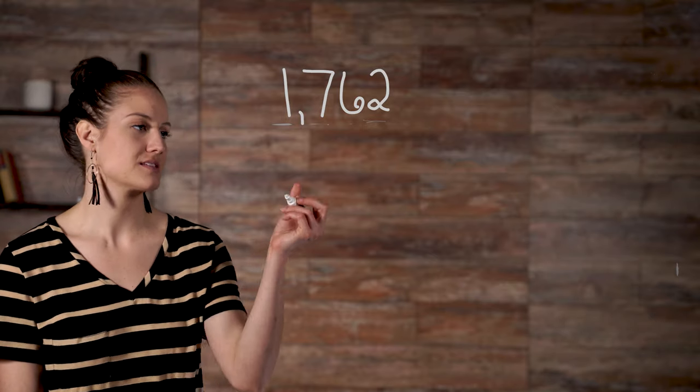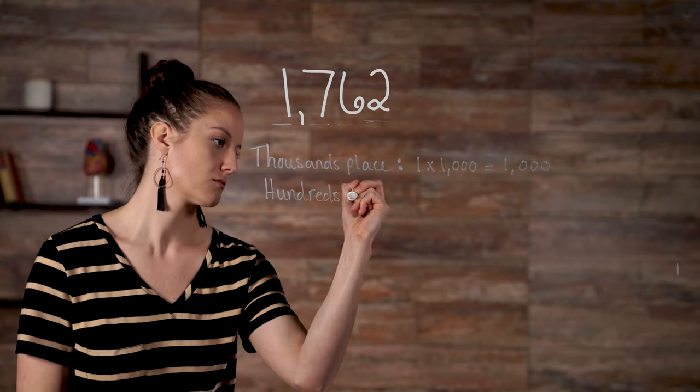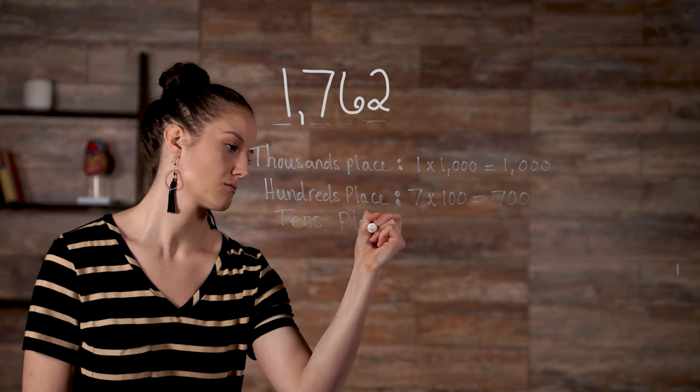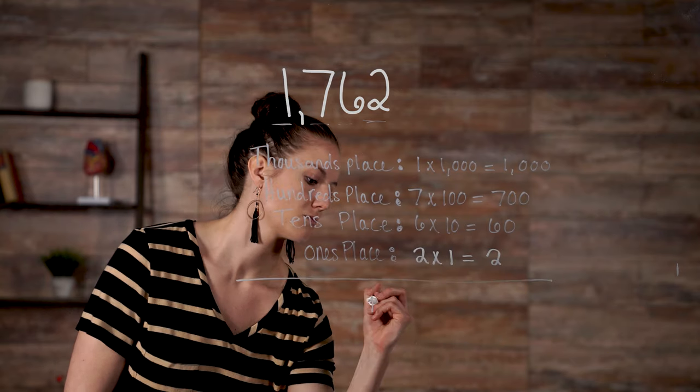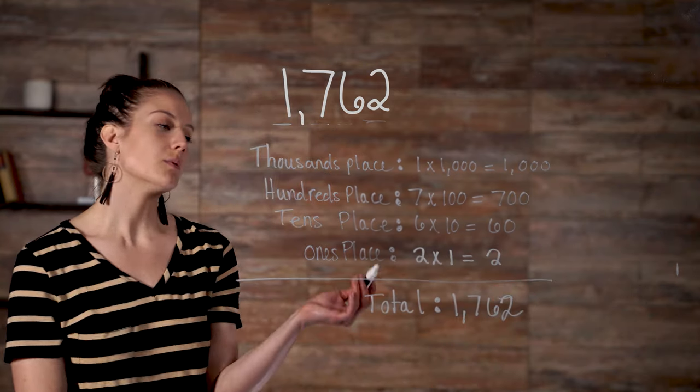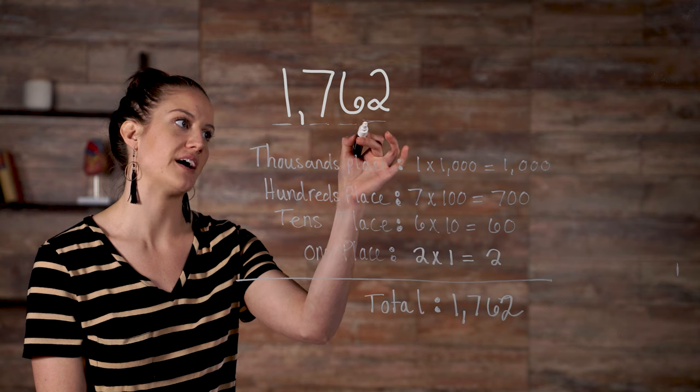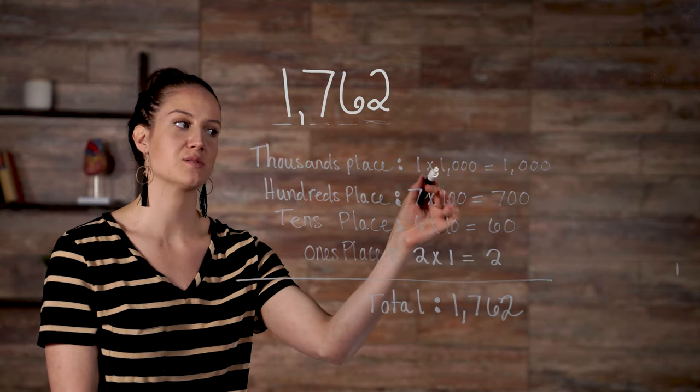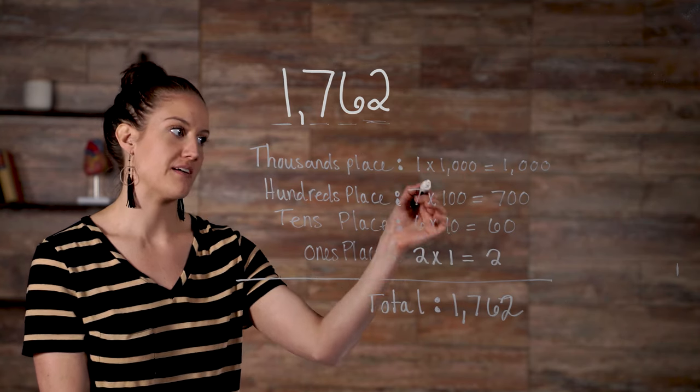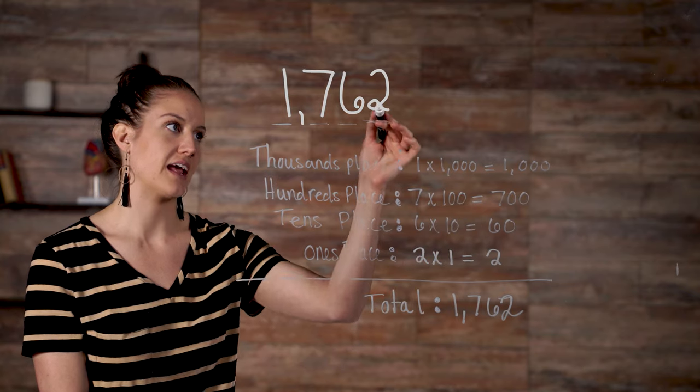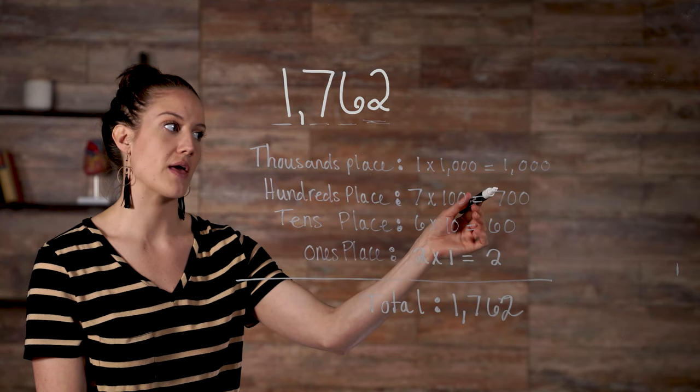Here's another way to think through this. We should be able to multiply whatever number is in a specific place value. We should be able to take that number and multiply it times its place value. So in this case, it's in the thousandths place. So we should be able to multiply it by a thousand, multiply seven by one hundred, six by ten, and then two by one. So again, we're multiplying every number by its place value. And then when we add it all up, we should get the total, which is equal to our number.